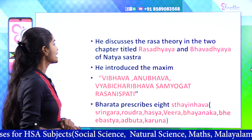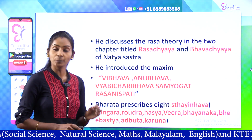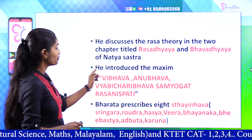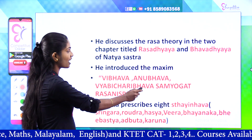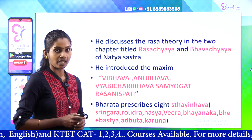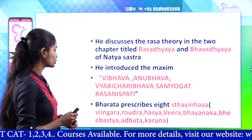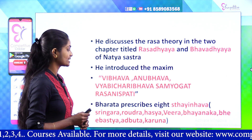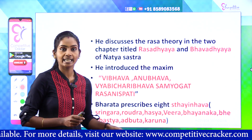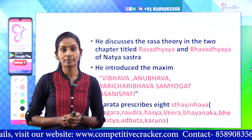Bharata Muni introduces his Maxim. Bharata Muni prescribes eight sthayi bhava — eight dominant emotions. What are these emotions? Shringara, Raudra, Hasya, Vira, Bhayanaka, Bibhatsa, Adbhuta, and Karuna. These are why we call them the eight dominant emotions, the sthayi bhava.